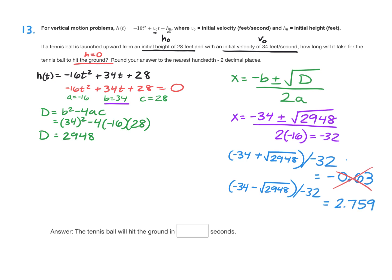I'm going to again round to the nearest hundredth, which is two decimal places. The nine there rounds up. So let's go 2.76. And that's the time in seconds when the tennis ball will hit the ground. Thank you.